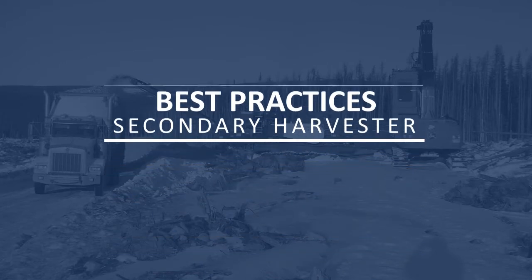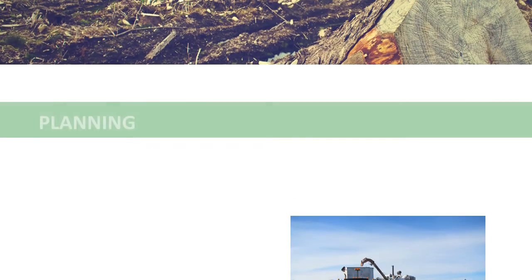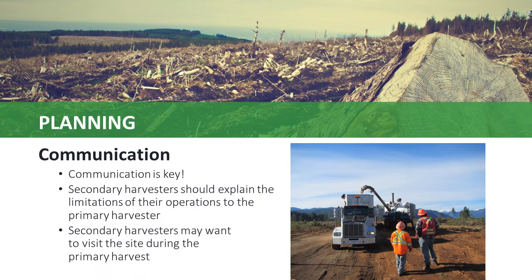Best Practices for Secondary Harvesters: This section will describe some of the practices that secondary harvesters should consider when planning their harvest, managing the quality of their product, and leaving a site after completion. Communication between primary and secondary harvesters is critical and needs to be started early. In many cases, primary harvesters are unfamiliar with the needs and systems of the secondary harvester. A site visit to speak to the primary harvester may help open the lines of communication and improve the understanding of what is necessary for the secondary harvester to be productive and operate economically.